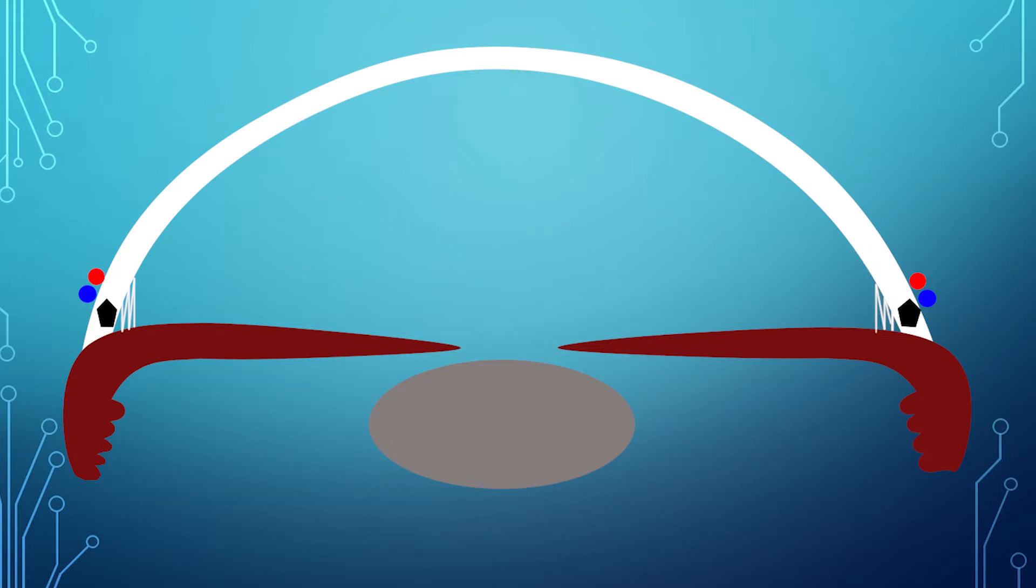So the aqueous fluid is made by the epithelium of the ciliary body. So it starts here. Then it travels in front of the lens, then around the iris, back towards the trabecular meshwork, which it passes through, and then enters the canal of Schlemm.